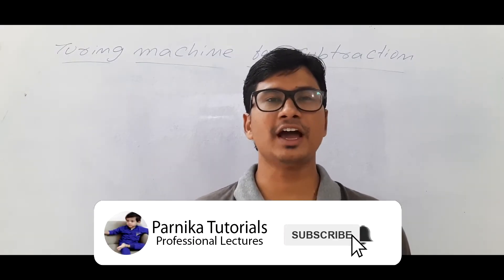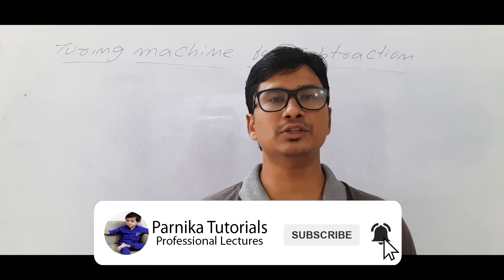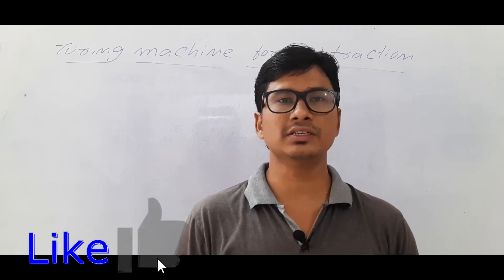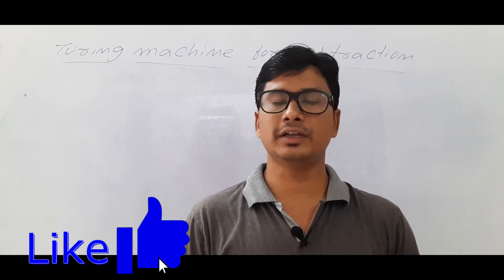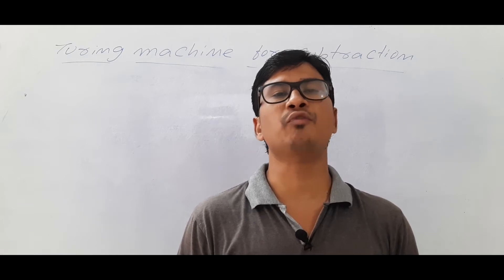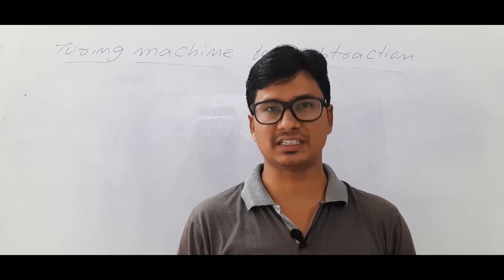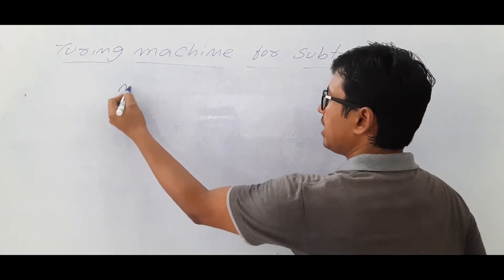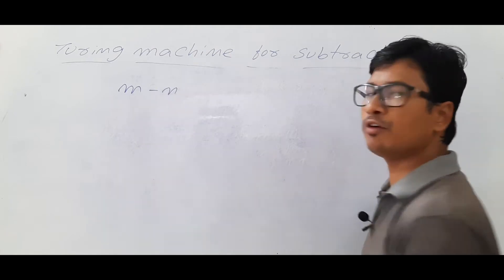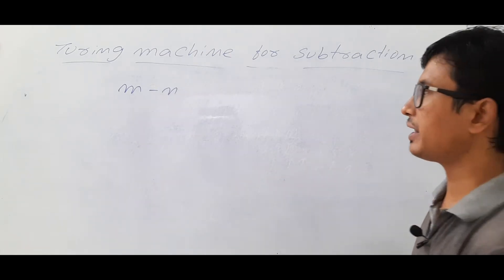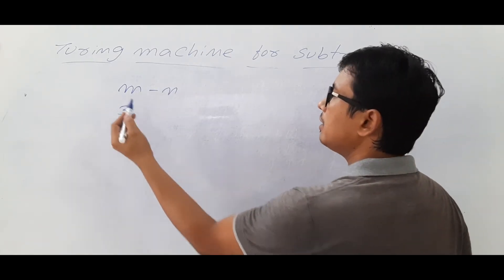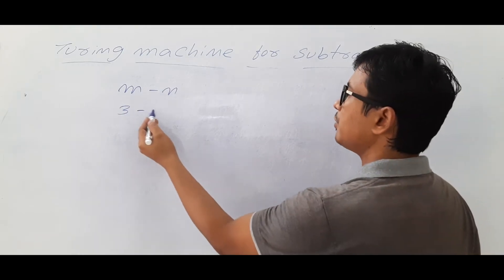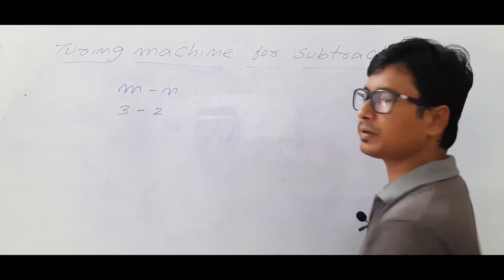Good morning friends, I hope everyone is doing well. In this video I want to discuss designing a Turing machine for performing subtraction. Suppose I have an m value and an n value — for example, a binary decimal number 3 and I want to perform subtraction with 2.